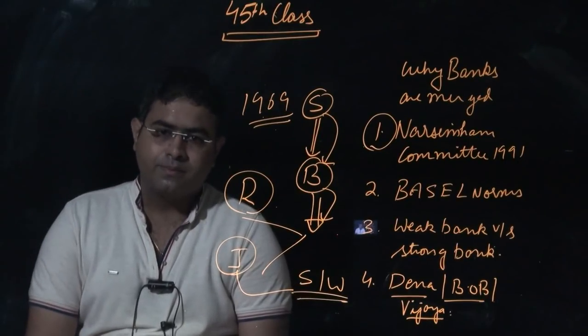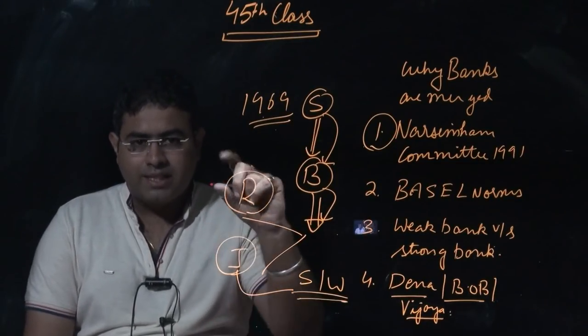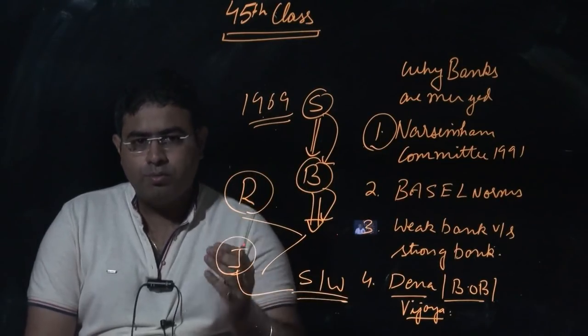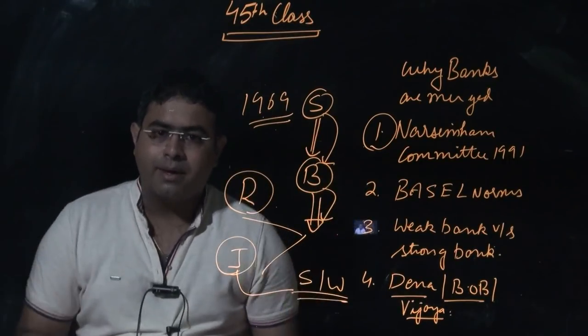What is the concept of weak bank and strong bank? Weak bank means you have less number of branches, your operation is small, and your NPA is high. Strong bank means your NPA is less and you are a bigger bank.